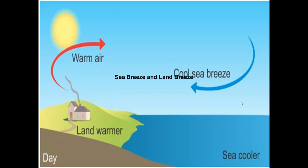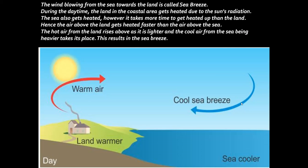Now let us learn the new concept of sea breeze and land breeze — a very interesting concept from this chapter. First, let us understand what sea breeze is. The wind blowing from the sea towards the land is called sea breeze. If you have gone to a coastal area, you might have experienced the sea breeze — the nice cool breeze that flows from the top of the sea and reaches the coastal land area.